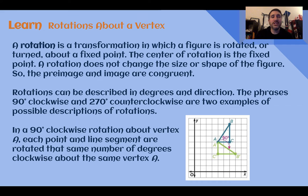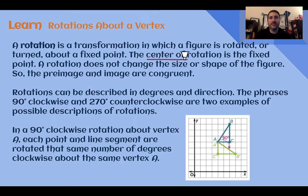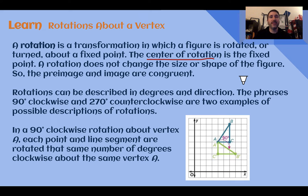Let's learn. Rotations about a vertex. A rotation is a transformation in which a figure is rotated or turned about a fixed point. Rotations are our third type of transformation we've seen, in addition to translations and reflections. The center of rotation is the point that's fixed that the object or the shape rotates around. A rotation does not change the size or shape of the figure, so the pre-image and the image in a rotation are congruent, similar to translations and reflections.